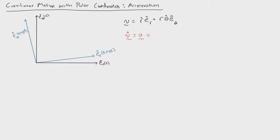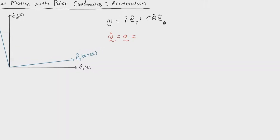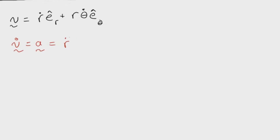Taking the derivative of the first term: that's going to be r_double_dot, multiplied by e_r. Then we take the derivative of e_r, which gives us r_dot times e_r_dot.